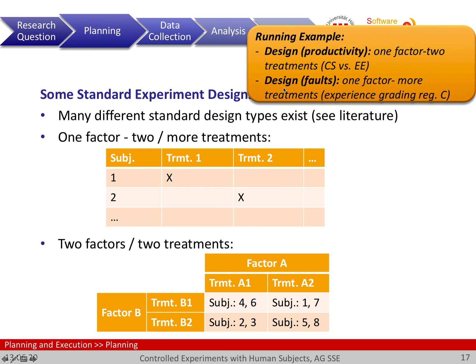However, it should also be observed that in the running example, we actually perform both experiments at the same time with the same executions. We have a CS and EE course; in each, people are grouped with respect to their experience, they do C programming, and from that we get both productivity and fault data. So it's the same execution that informs both designs simultaneously — a smart overlay to minimize total effort and get the most information from the subjects' work.